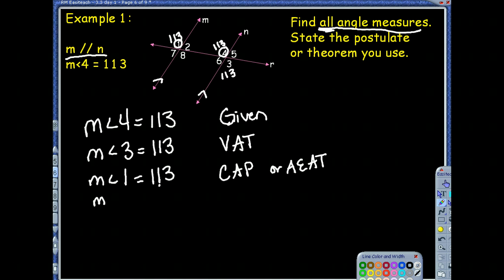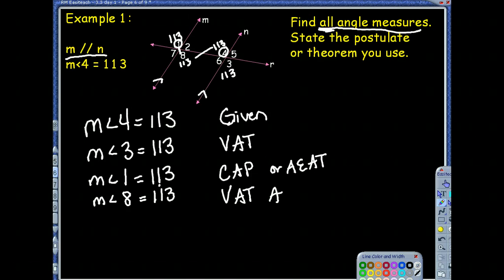Angle 8 is also 113 degrees. One reason is the vertical angle theorem, since angle 1 and angle 8 are vertical angles. To use the parallel lines, we could say angle 8 is 113 because of the alternate interior angle theorem — angle 4 and angle 8 are alternate interior angles, and because of parallel lines, they're congruent. You could also use the corresponding angles postulate since angle 8 and angle 3 are corresponding.